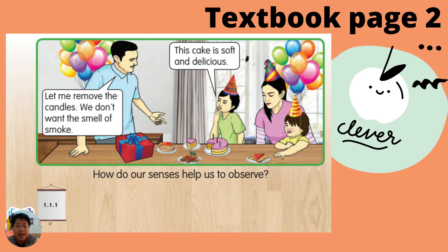Moving on, still on page number two, there is another situation. Look at the father. He said, 'Let me remove the candles. We don't want the smell of smoke.' So how can he smell? He smells with his nose. Then the girl with the green shirt said, 'This cat is soft and delicious.' How can she know it is soft? Because she is using the sense of touch — she is touching with her hand. And how can she know it is delicious? Because she used her tongue to taste.